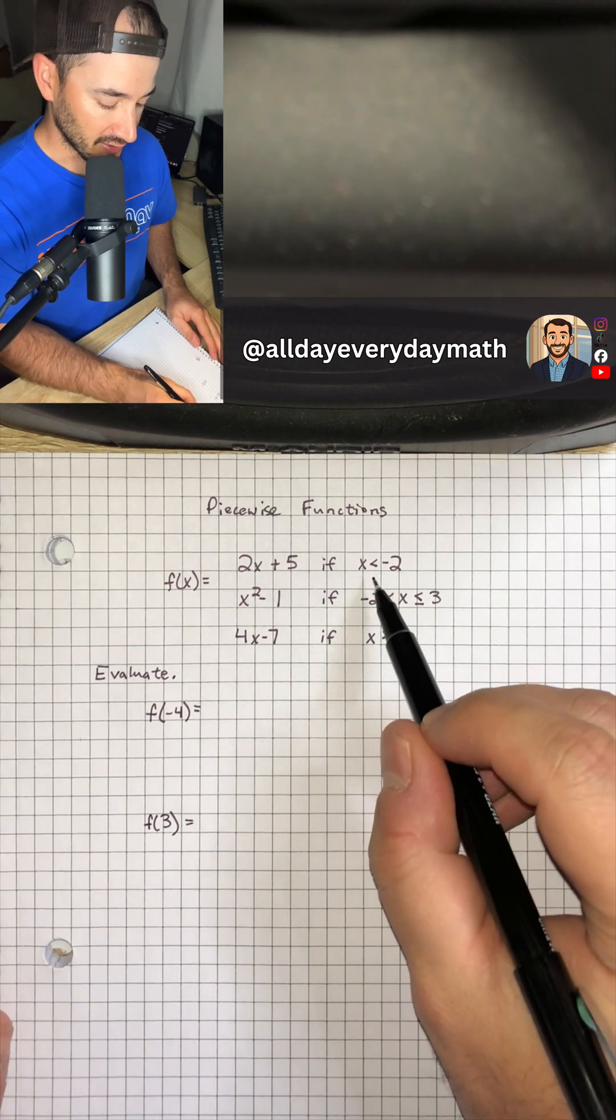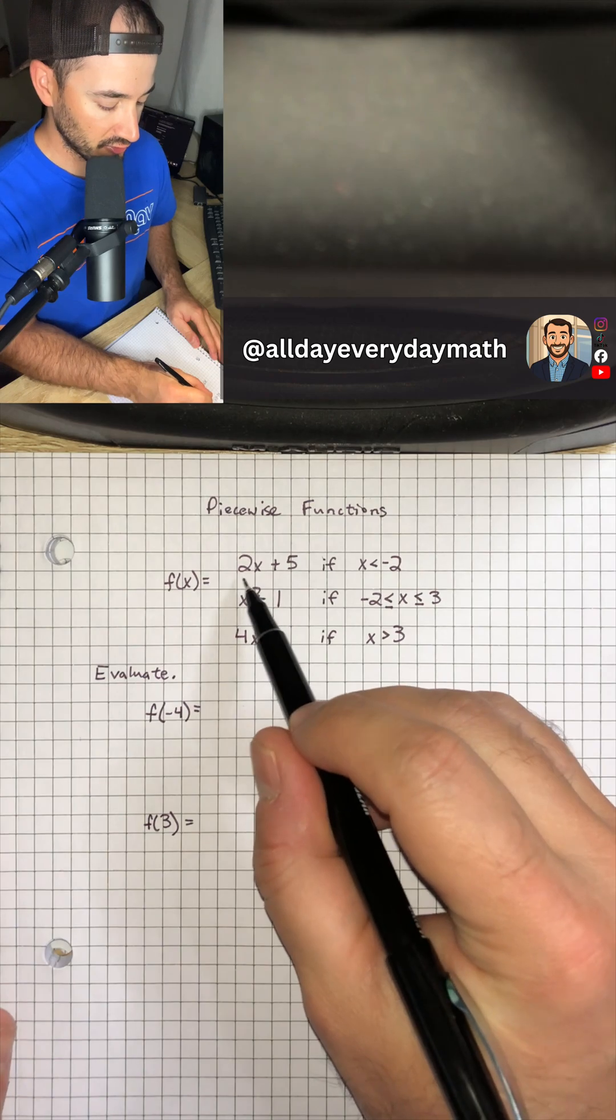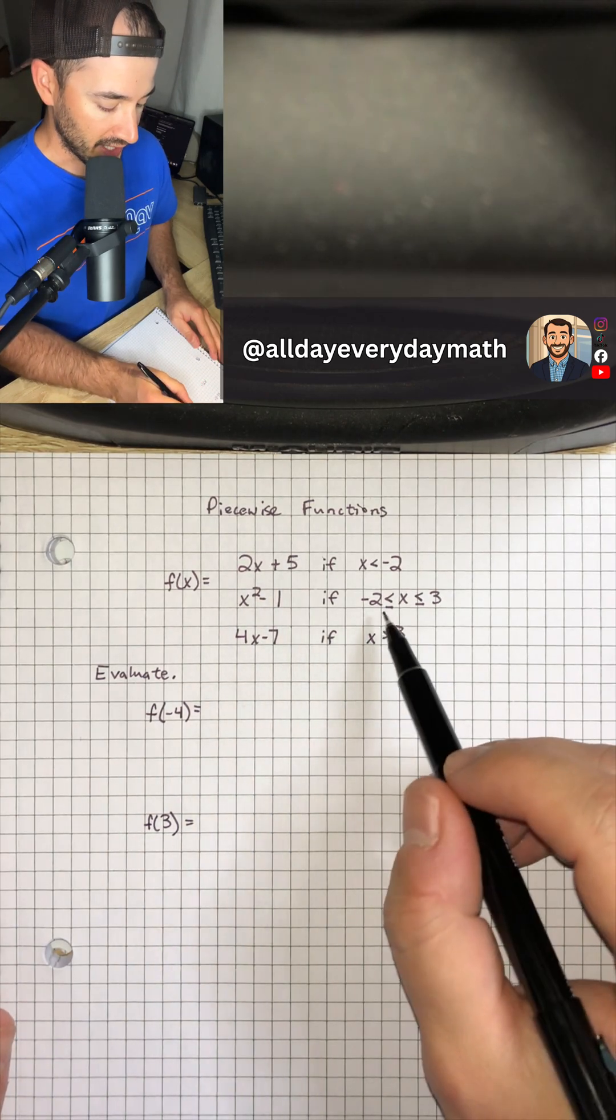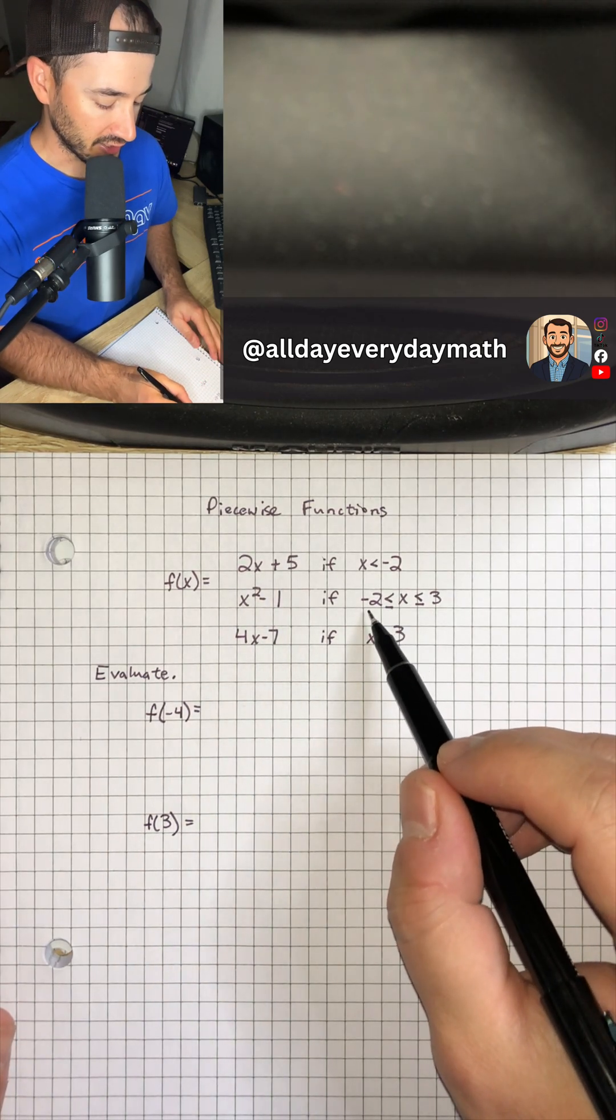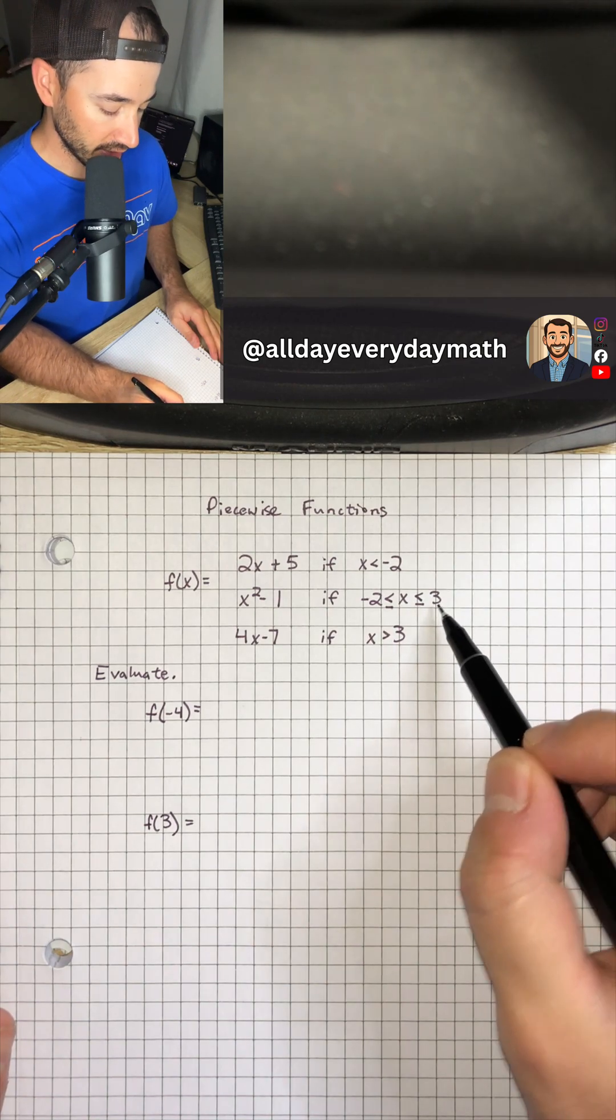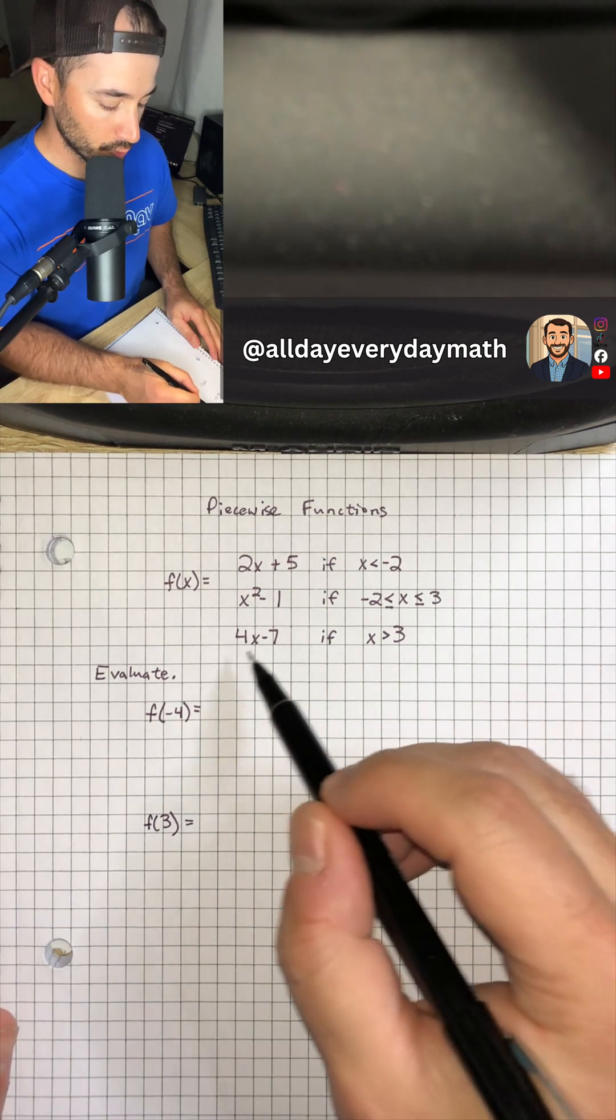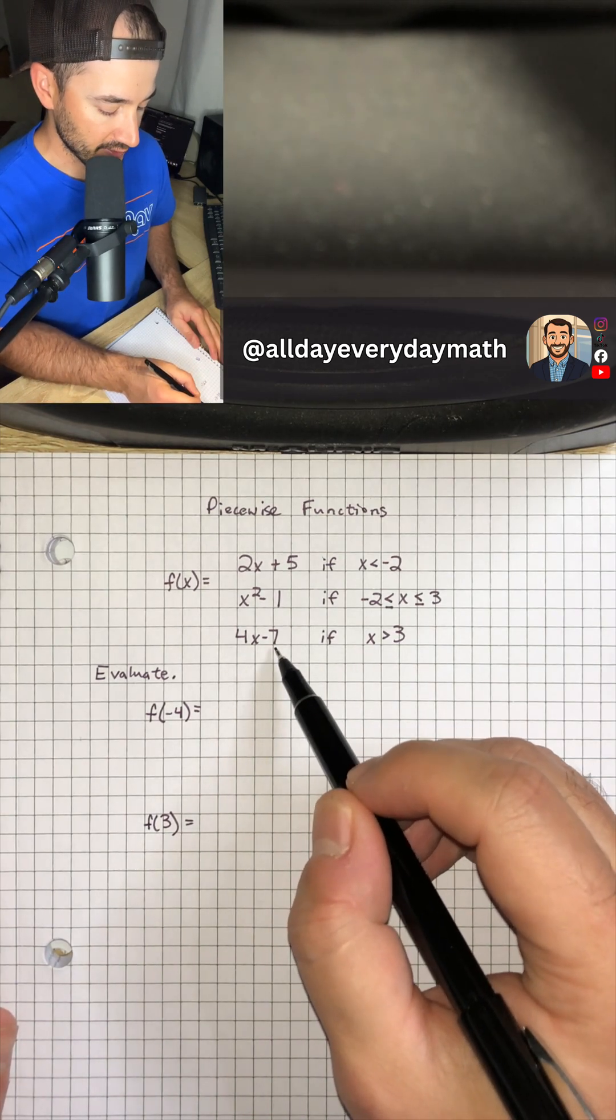So whenever x is less than negative 2 in this example, we use the function 2x plus 5. When x is greater than or equal to negative 2 or less than or equal to 3, we use x squared minus 1. And when x is greater than 3, we use 4x minus 7.